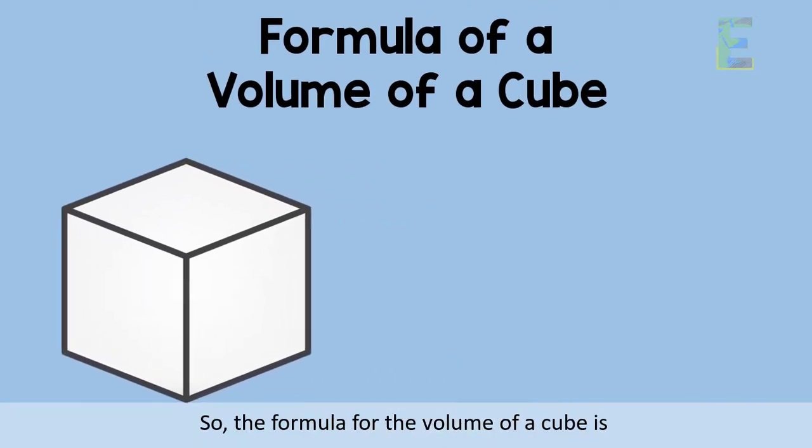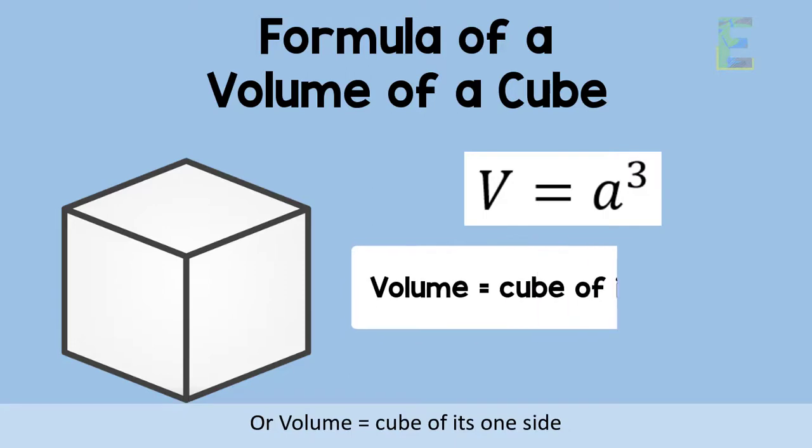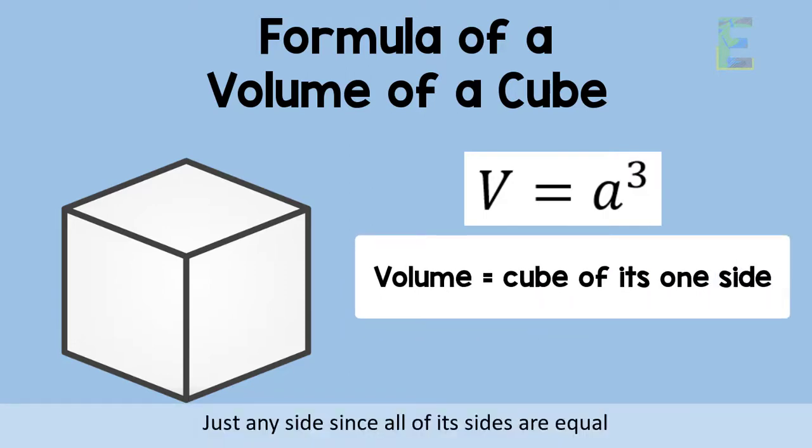So, the formula of a volume of a cube is V equals a cubed, or volume equals cube of its one side. Just any side since all of its sides are equal.